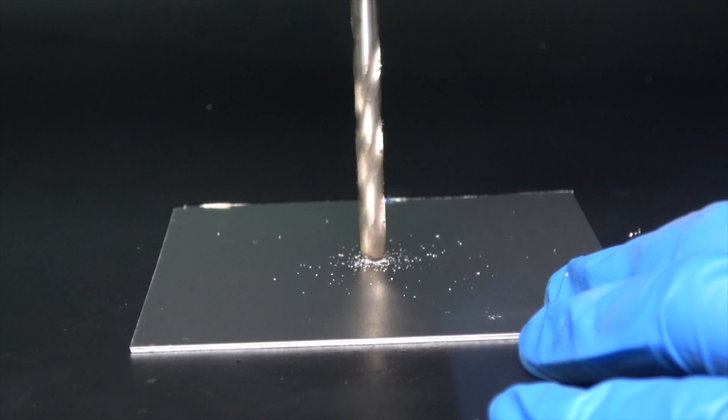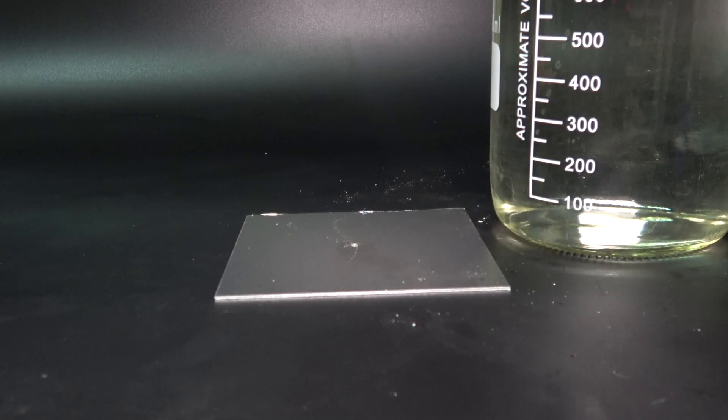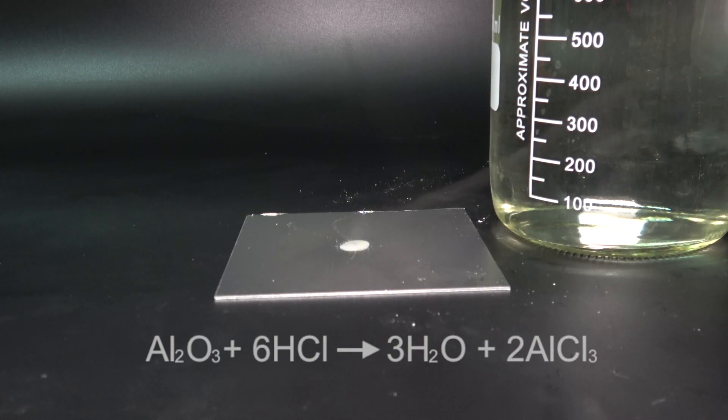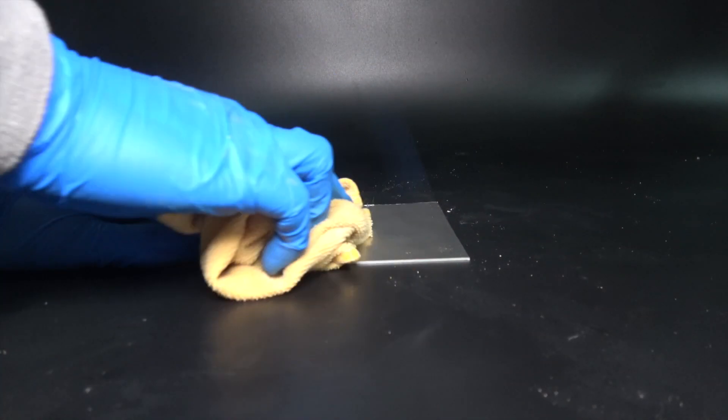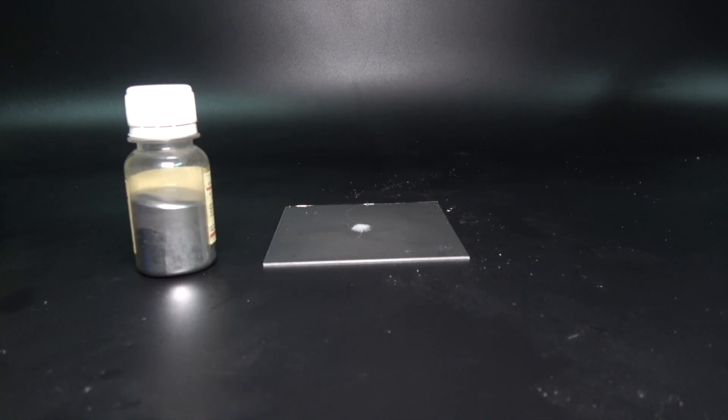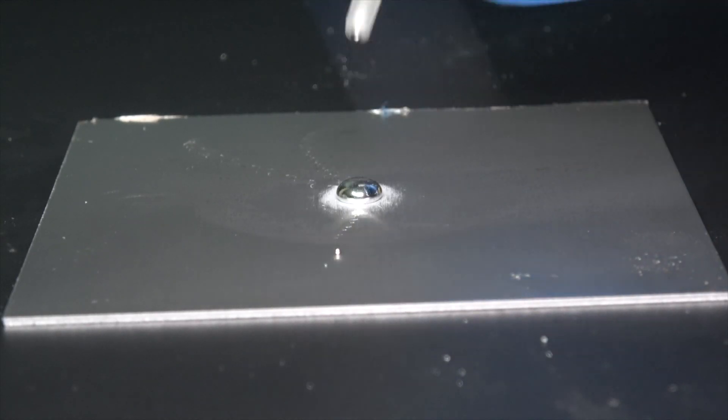So I drew a hole to expose the fresh metal underneath. To further ensure the metallic aluminum is well exposed, I added a few drops of hydrochloric acid. This will serve to get rid of any remaining oxide layer by turning it into aluminum chloride, which dissolves away in the solution. I got rid of that after letting it sit for a while.